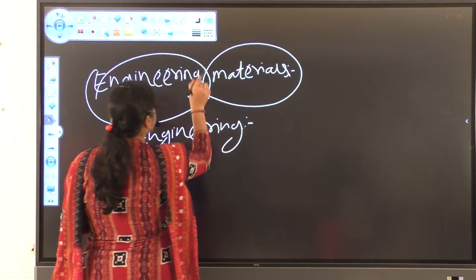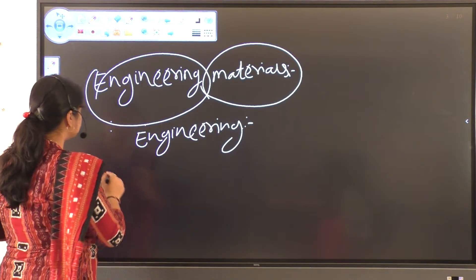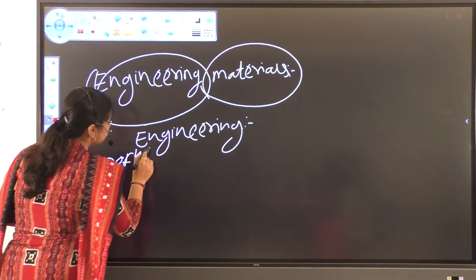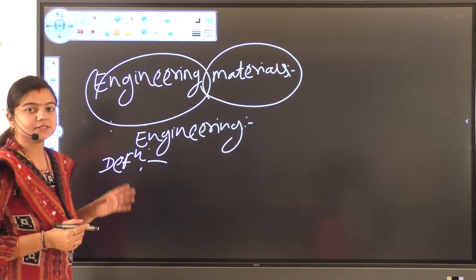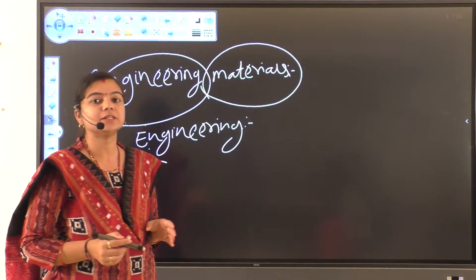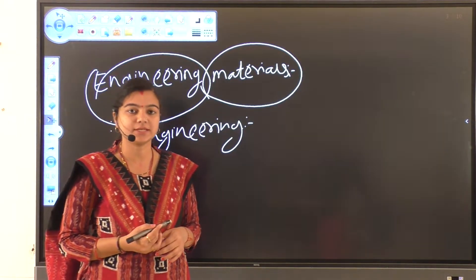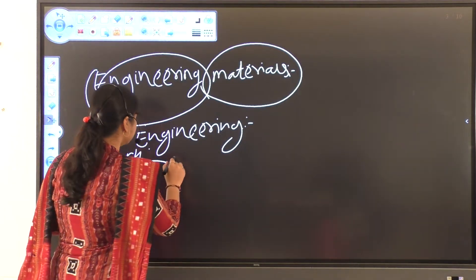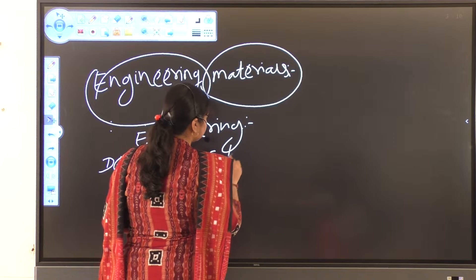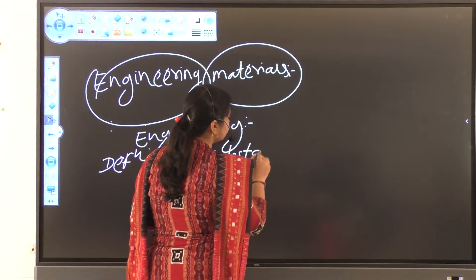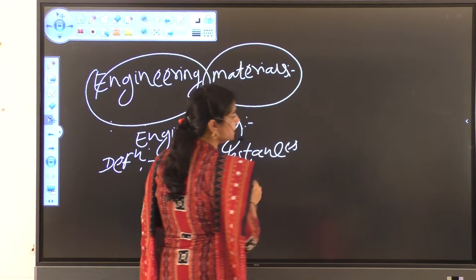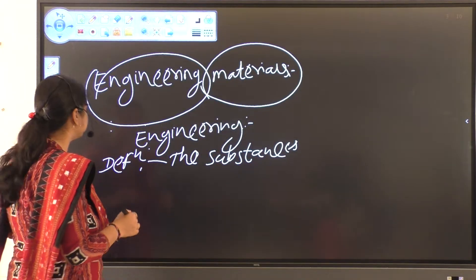Then the definition of Engineering Materials. Now we discuss the definition of Engineering Materials. What is Engineering Materials? The substances which are useful in the field of Engineering are known as Engineering Materials.